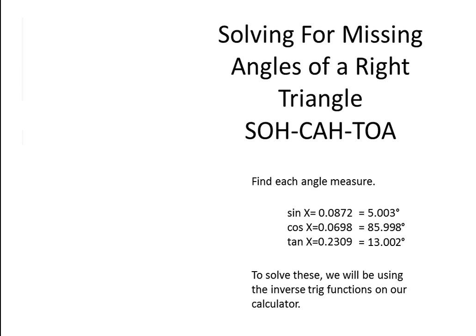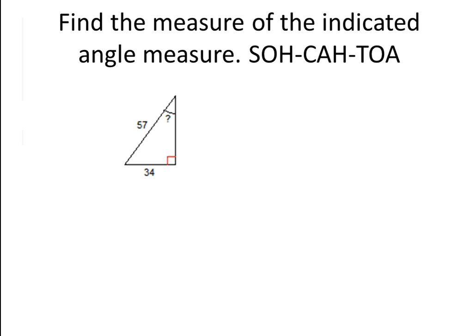Let's move on. I have an example where we want to solve for the angle question mark. The first thing I want to do is identify what I have. My 34 would be the opposite side and my 57 is the hypotenuse. SOH-CAH-TOA — the trig function with O and H is sine. So sine of theta equals opposite over hypotenuse, which gives us sine of theta equals 34 over 57.